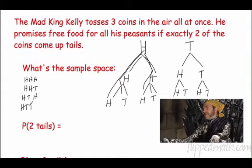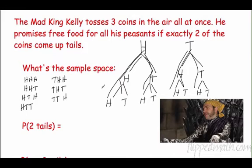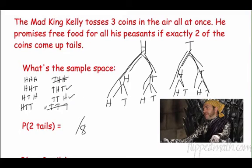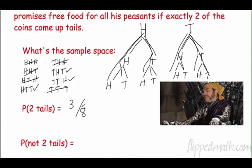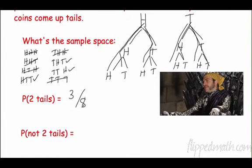Listing all outcomes: HHH, HHT, HTH, HTT, THH, THT, and continuing — we get eight total possibilities. To find the probability of getting exactly two tails, we identify: HTT, THT, TTH — that's three outcomes with exactly two tails. So the probability is three out of eight. The remaining five out of eight do not have exactly two tails.